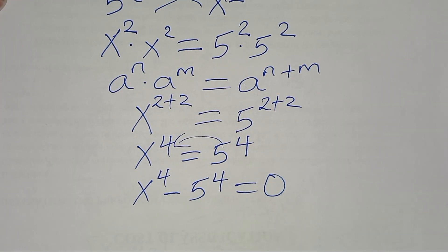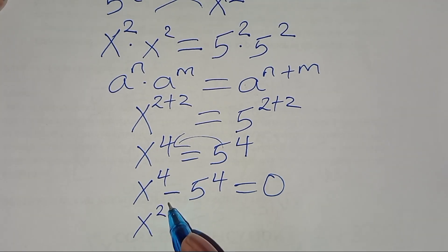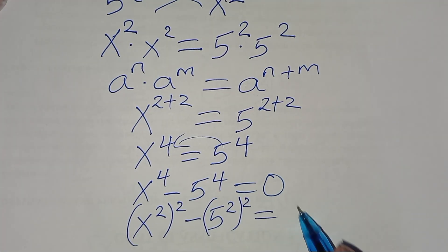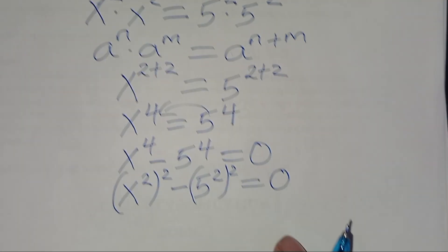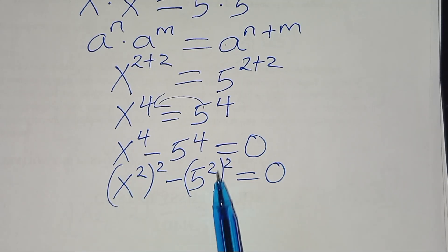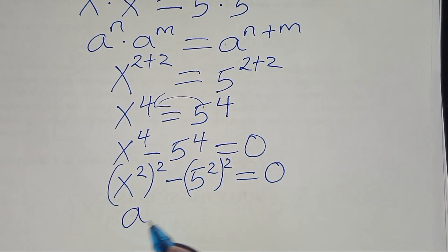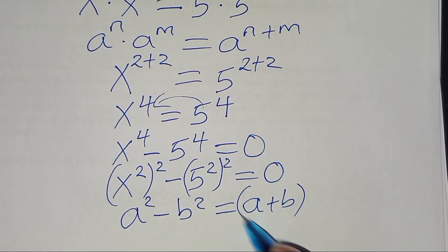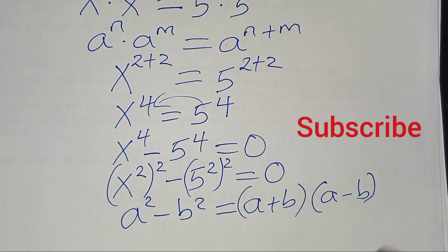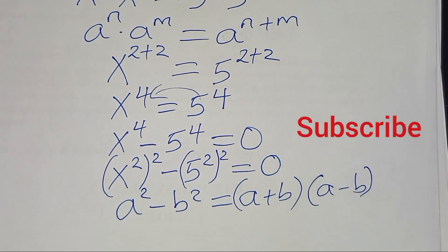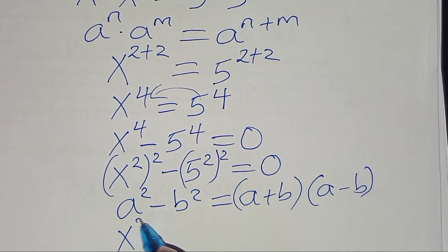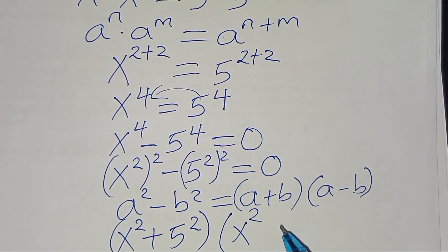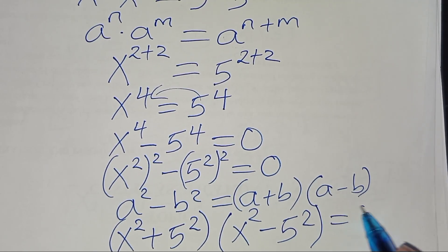We can express x to the power 4 subtract 5 to the power 4 as x squared to the power 2 minus 5 squared to the power 2. This is in the form of a squared minus b squared, which we can express as (a plus b)(a minus b). So we'll have x squared plus 5 squared times x squared subtract 5 squared, equal to 0.